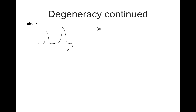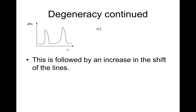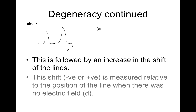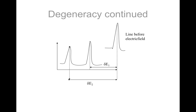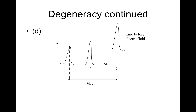Figure C shows the increased splitting. This is followed by an increase in the shift of the lines. This shift, positive or negative, is measured relative to the position of the line where there was no electric field, as shown in diagram D. Delta E1 is the splitting of the first line, and delta E2 is that of the second line.